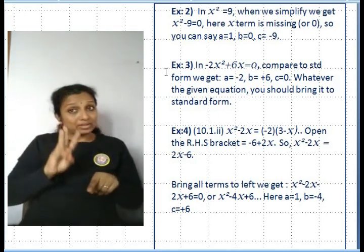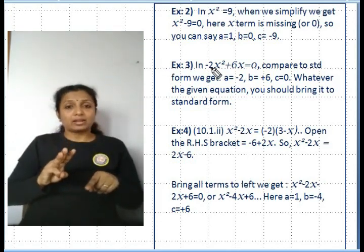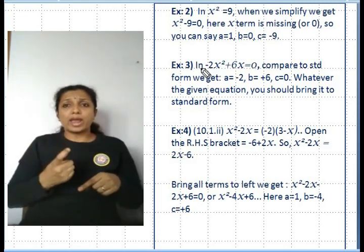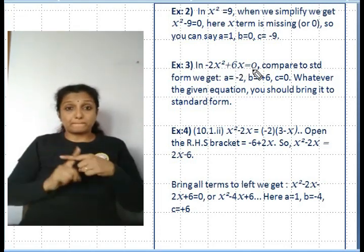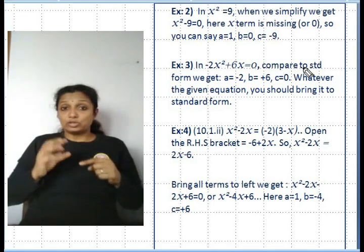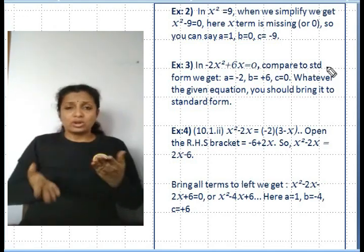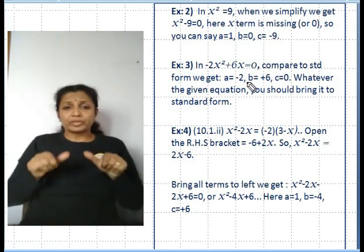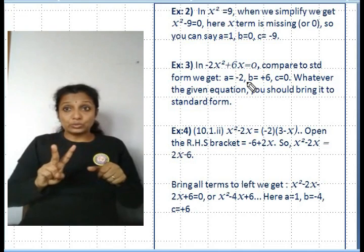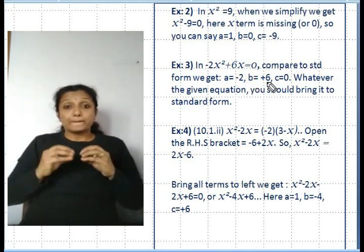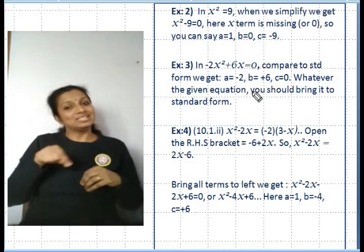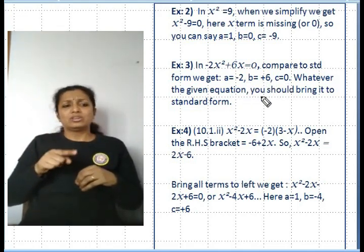Example 3: -2x² + 6x = 0. Comparing to the standard form, we get a = -2, b = 6, c = 0. Whatever the given equation is, you should try to bring it to the standard form.